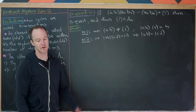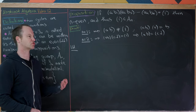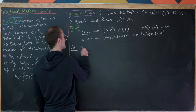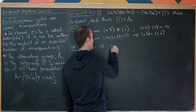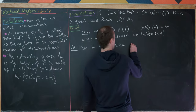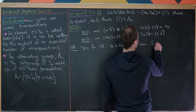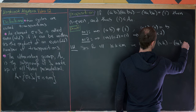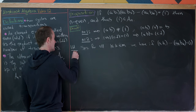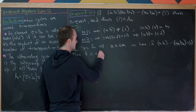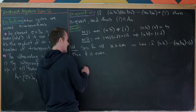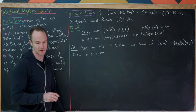We'll use strong induction. Suppose for all K between 1 and M (not including M): if the product of K transpositions equals the identity, then K is even. This is our strong induction hypothesis. Before starting the induction step, let's make an observation that will help with the calculation.